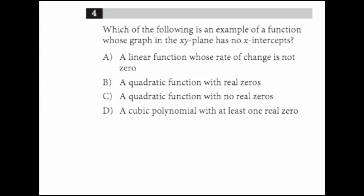The x-axis is a horizontal line and thus has a slope of zero. So the graph of the linear function whose rate of change is not zero is a line that is not parallel to the x-axis.